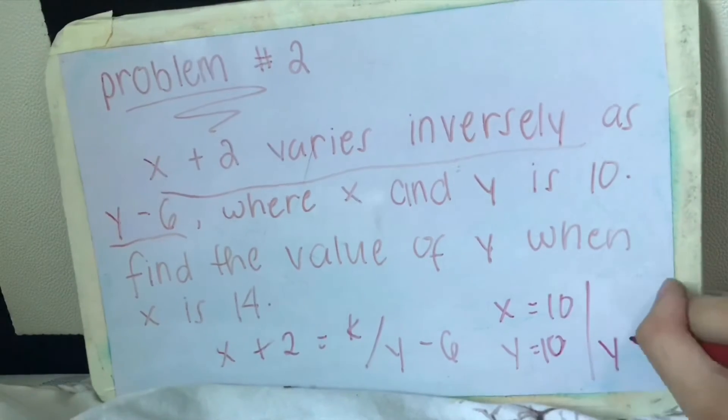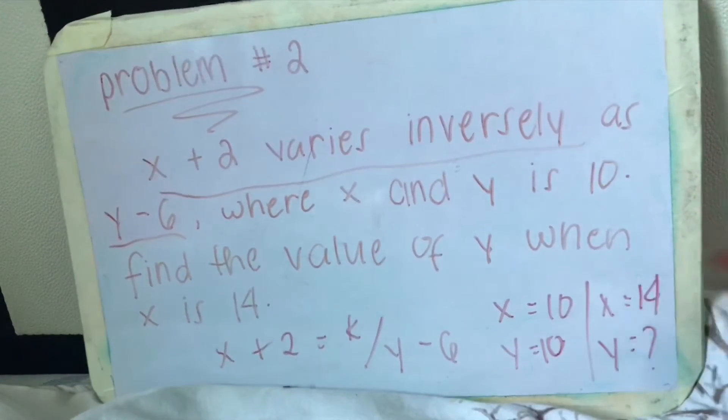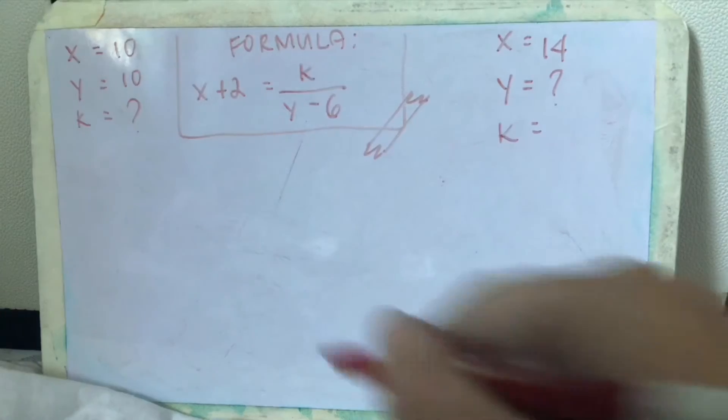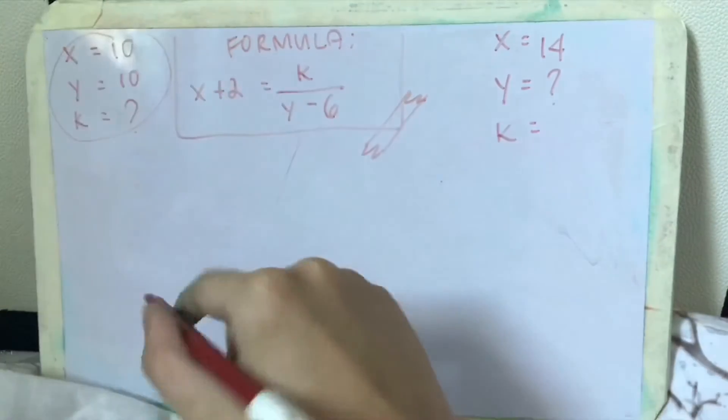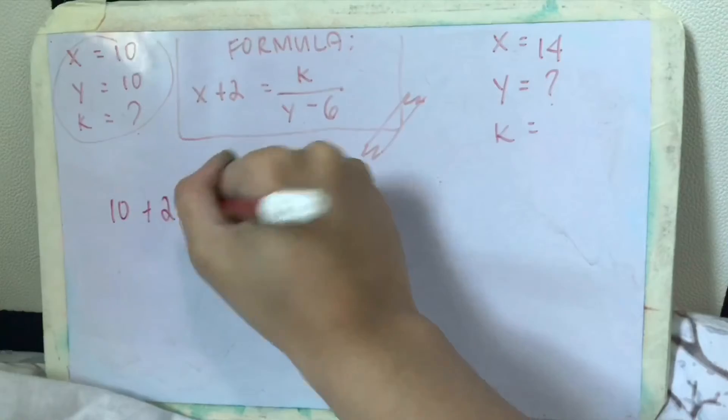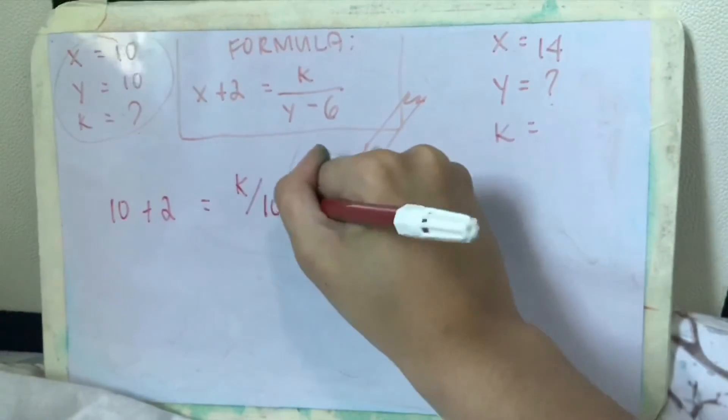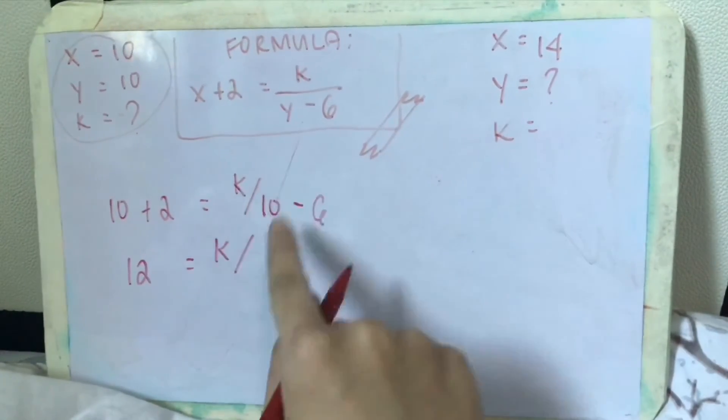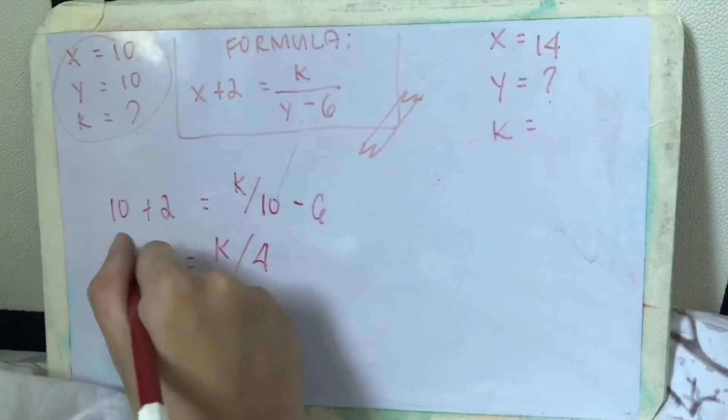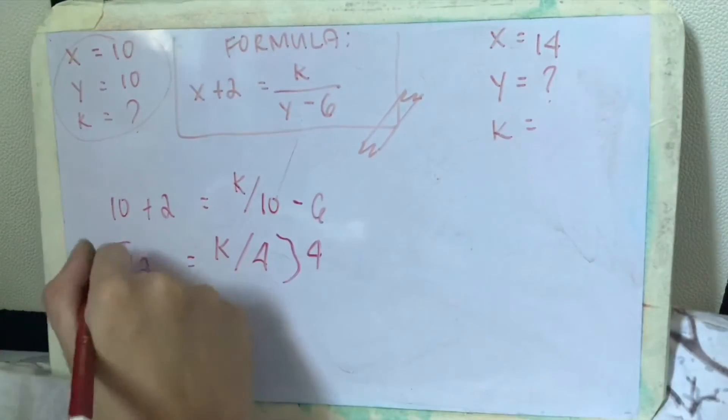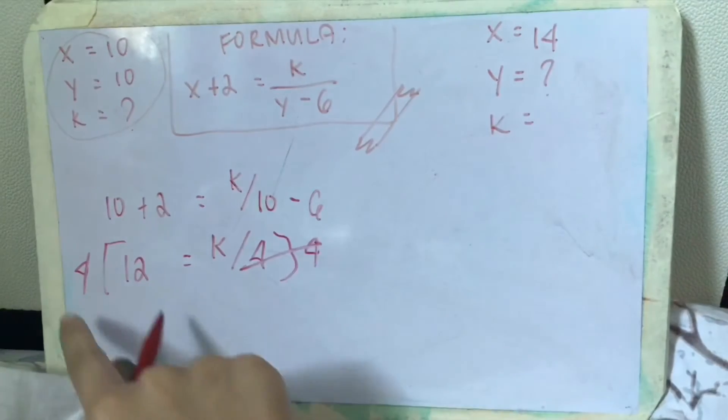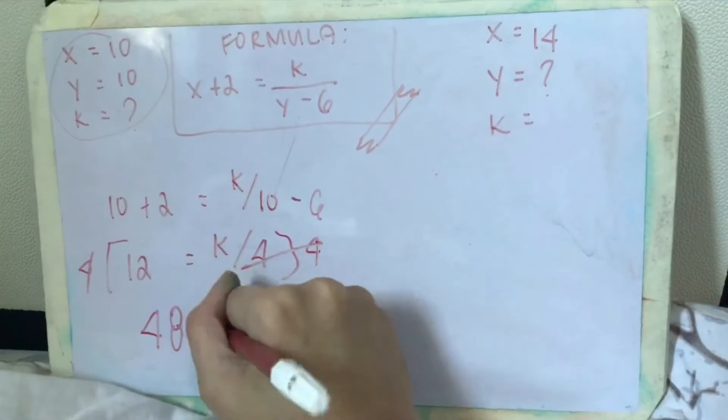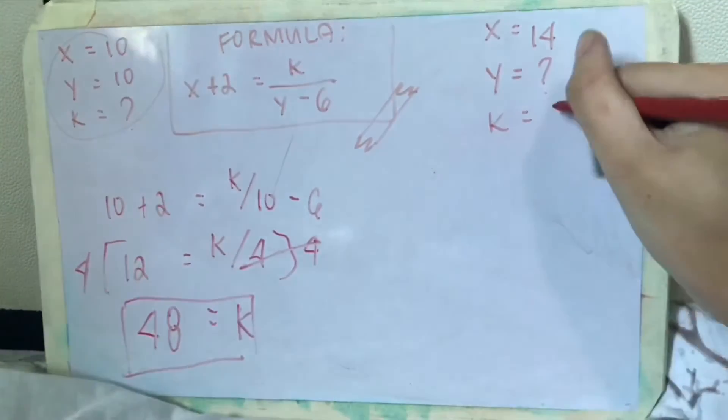As always, we should always find the value of the constant. To find the value of the constant, let's substitute these values. So 10 plus 2 equals k over 10 minus 6. 10 plus 2 is 12, k over 10 minus 6 is 4. So let's multiply both sides by 4. The 4 here will be canceled and 12 times 4 is 48 equals k. This is our constant, 48.